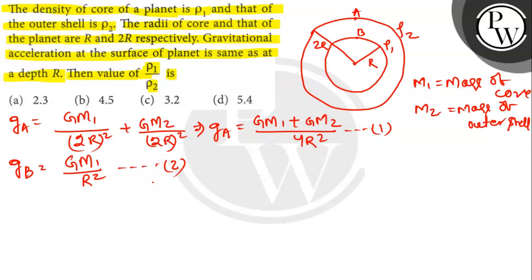According to the question, the acceleration due to gravity at the surface of the planet is the same as that at depth r. So we set g_A equal to g_B, giving us G(m1 + m2) / 4r² = G·m1 / r². This is equation 3.